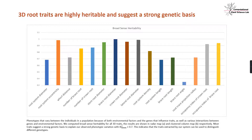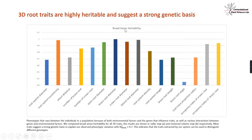Phenotypes are the interface between individuals in a population because of both environmental factors and the genes that influence traits. We computed broad-sense heritability for all 3D traits. The result shown in the cluster column map indicates that most traits suggest a very strong genetic basis — with broad-sense heritability values above 0.7. This indicates that the traits captured by our system can be used to distinguish different genotypes, which is very useful.